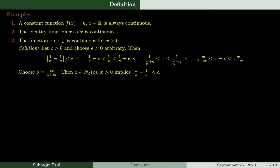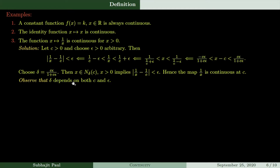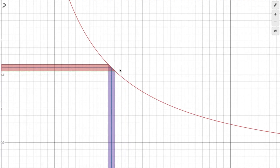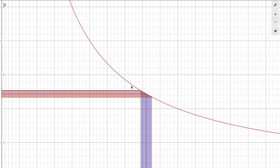Now, the reason this example was included: observe that delta depends on both c and epsilon — specifically, delta = cε/(1 + cε). In the previous two examples, delta did not depend on c. But in this example, delta expectedly depends on the point chosen as well.